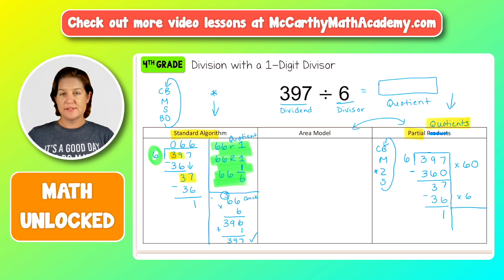So now what I do is I add these up. 60 plus six would be 66. Again, what I was adding up is right here. 60 and six is 66 with a remainder of one or again, 66 and one sixth.